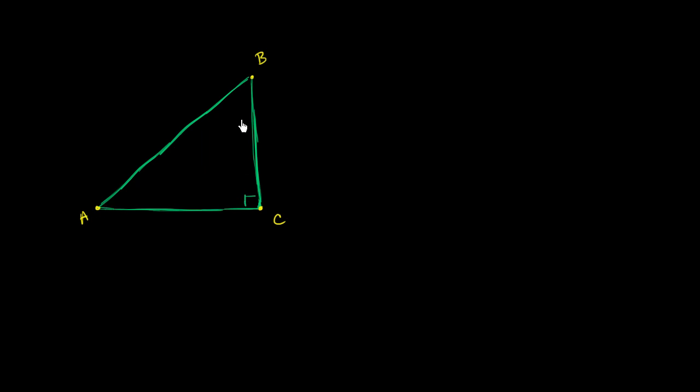We know that in a triangle there are three angles. And if we're talking about a right triangle, like the one I've drawn here, one of them is going to be a right angle. So we have two other angles to deal with.